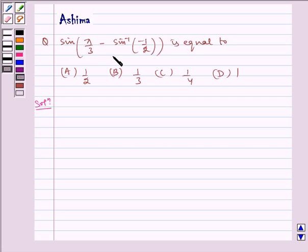We have sin of pi by 3 minus sin inverse of minus 1 by 2 is equal to: (A) 1 by 2, (B) 1 by 3, (C) 1 by 4, and (D) 1.